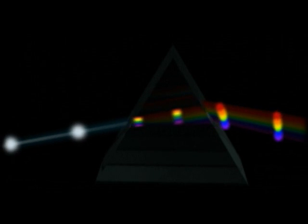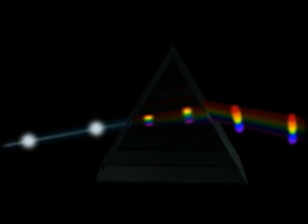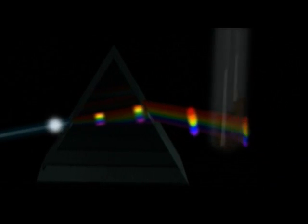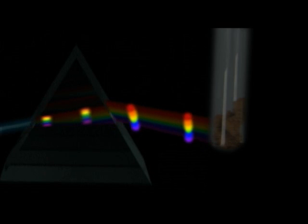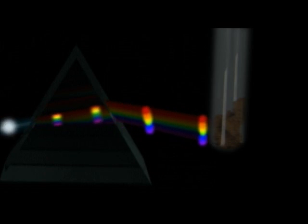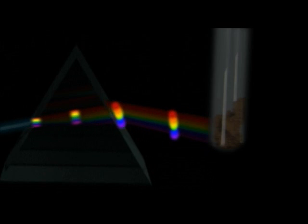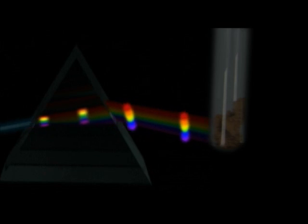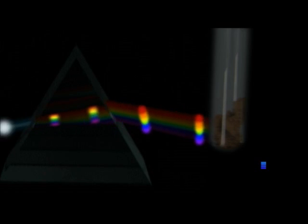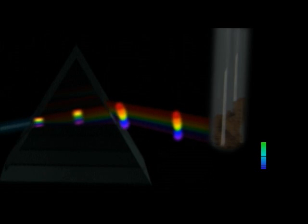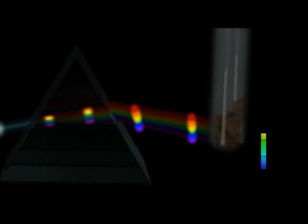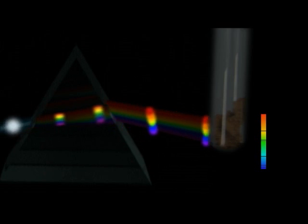Since white light contains all the colors in the spectrum, when we shine white light on a sample of an element under the right conditions, the atoms absorb all the photons that allow their electrons to jump to other energy shells. So the absorption spectrum is all the colors in white light minus those that match the difference in energy shells within the atom.